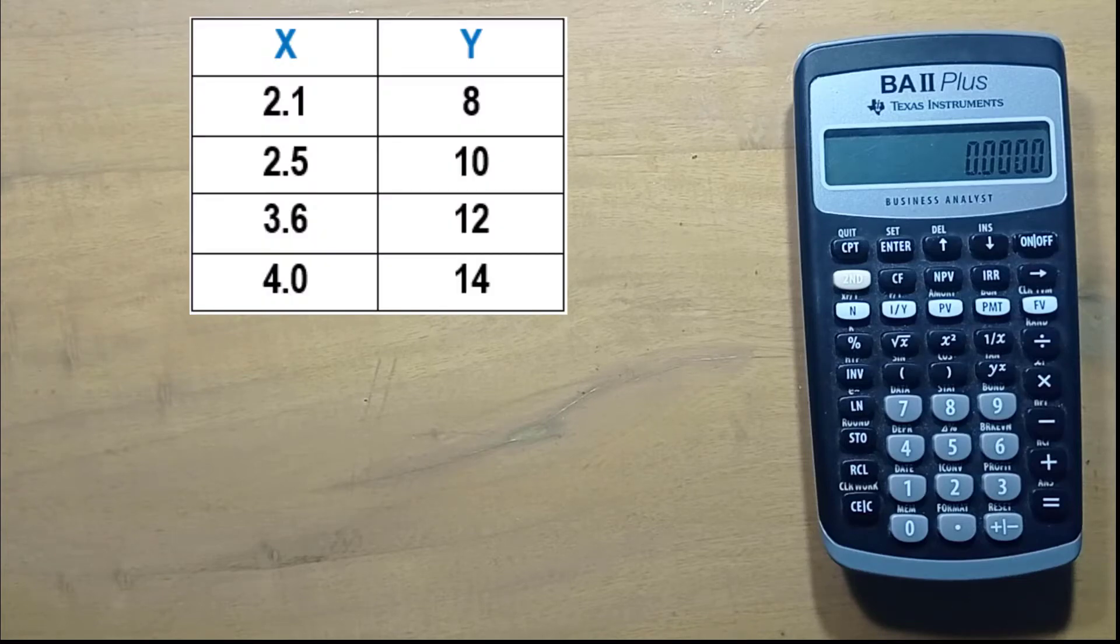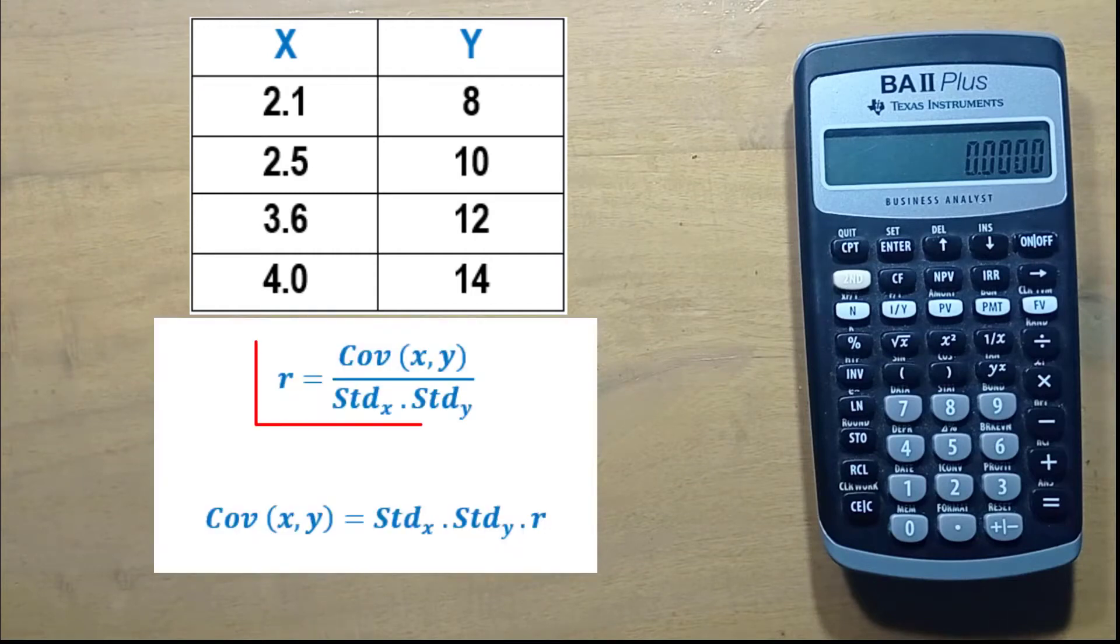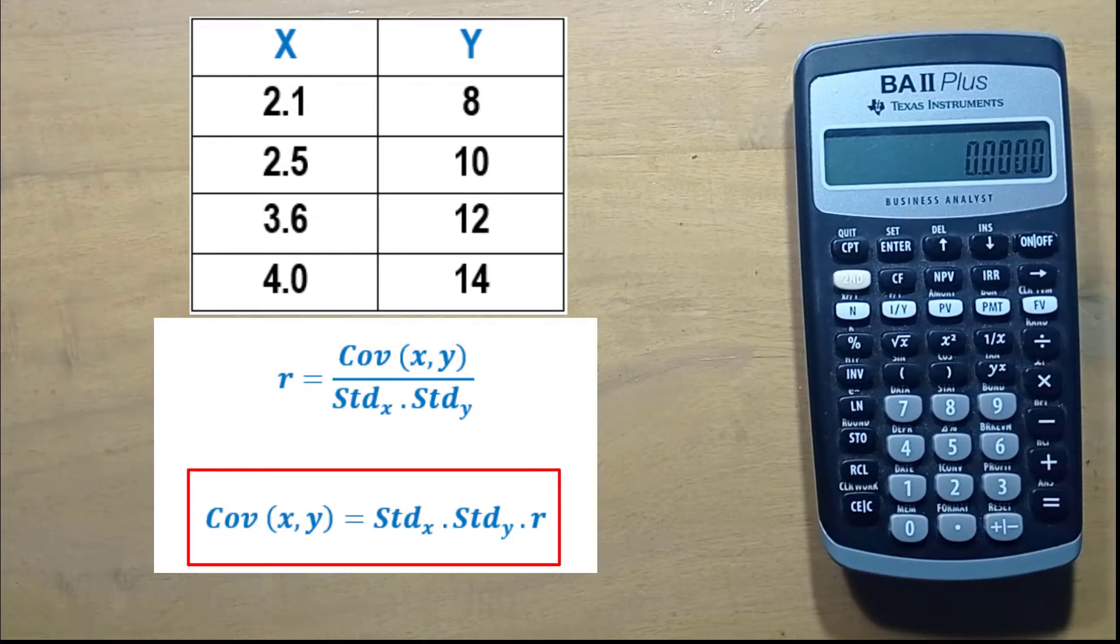I will be using this data set. Since correlation coefficient equals covariance divided by the product of standard deviation x and standard deviation y, we can say that covariance equals standard deviation x times standard deviation y times correlation coefficient r.